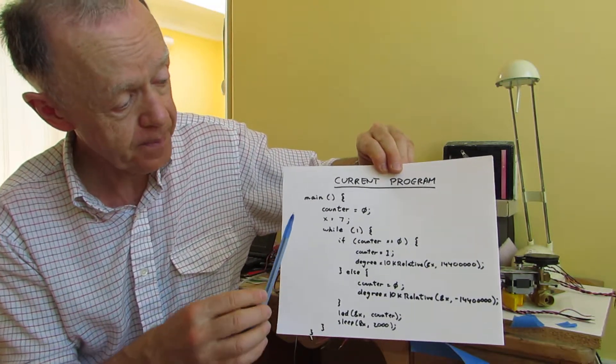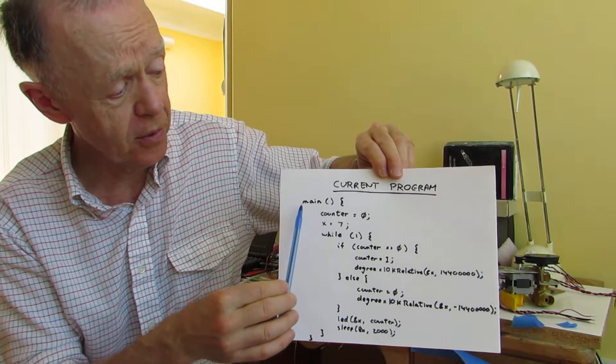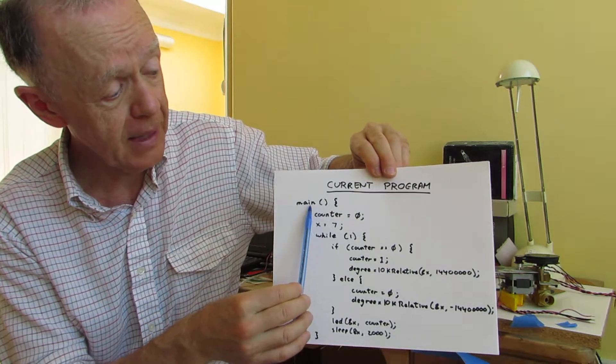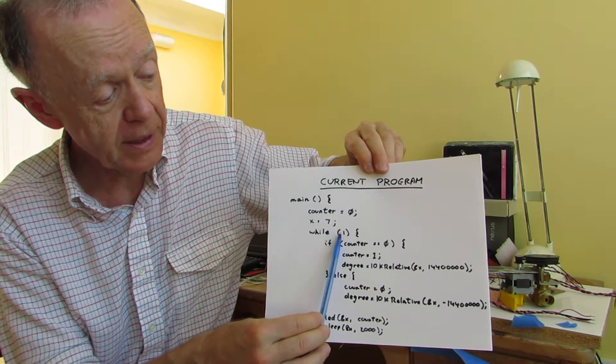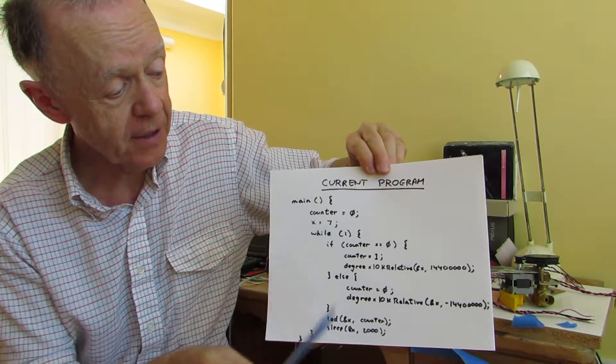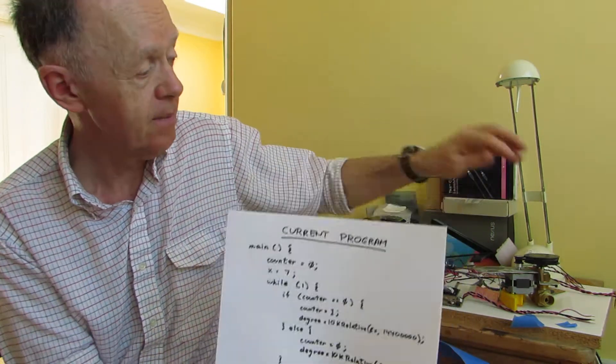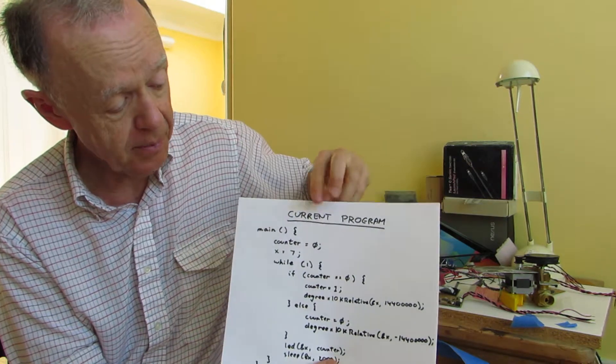If you're somewhat familiar with C, you always enter with main, and we have a couple of variables and we have a while loop that we just stay in forever. You can see this is just sitting in a big while loop.